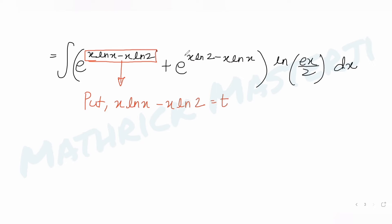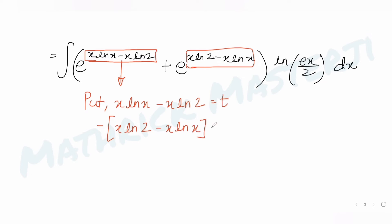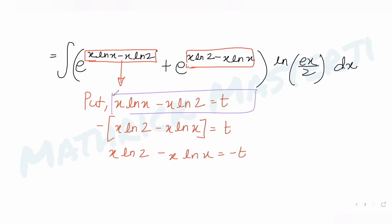I notice the second exponent is exactly the negative of t. Taking minus common: x·log 2 − x·log x = −t. So the first term's exponent is t and the second term's exponent is −t. Now I differentiate t with respect to x.